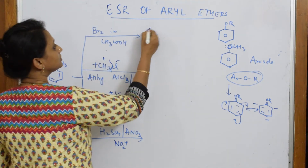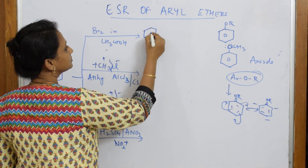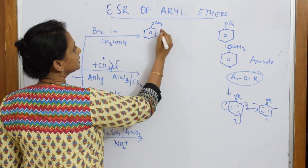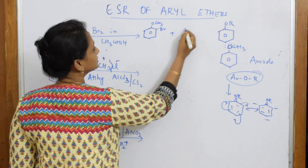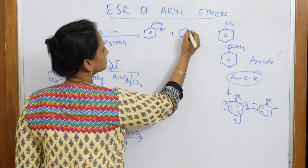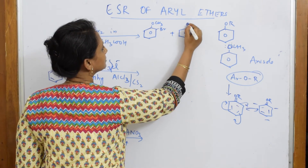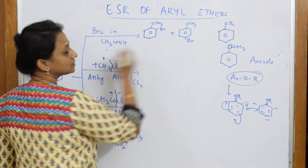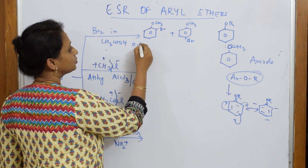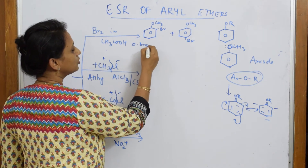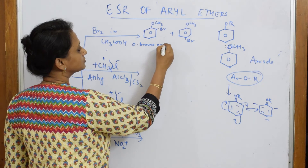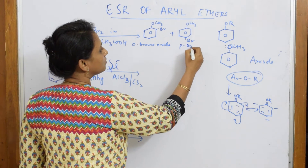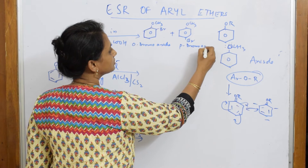Pick up anisole. Write anisole at the top — ortho plus para products. How to name this? Ortho-bromo-anisole. And this is para-bromo-anisole.